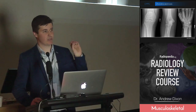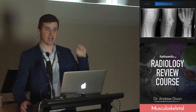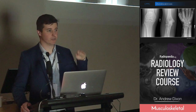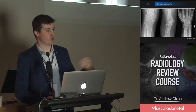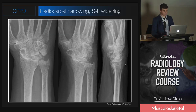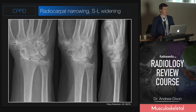Think of CPPD as an intra-articular phenomenon, within the joint itself, and that's why it can lead to joint destruction. Here at the wrist, it classically causes a radiocarpal joint appearance of osteoarthritis: joint space narrowing, subchondral sclerosis, and geode or cyst formation.